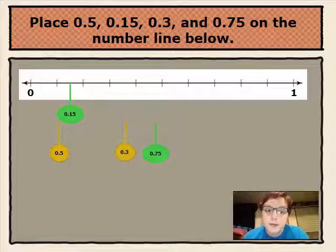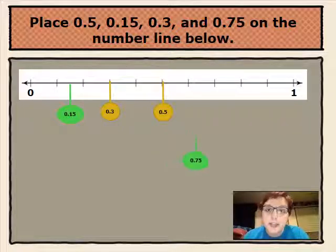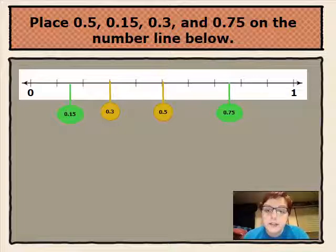Three tenths is on the third line from zero. Five tenths is on the fifth line from zero. And our last number is seventy-five hundredths because it is seven and a half from zero.